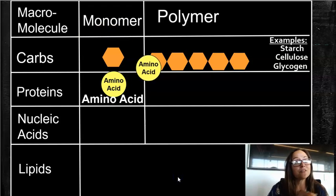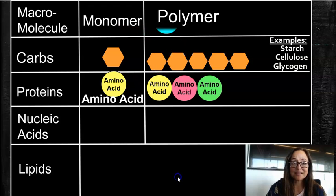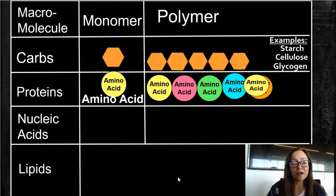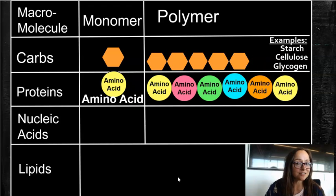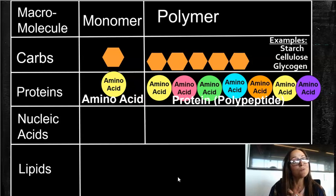And when we talk about the polymer, you're going to have a chain of amino acids. This polymer of a protein actually has a special name. It's called a polypeptide. So in this short little video we're going to talk about the monomer and polymer of proteins.